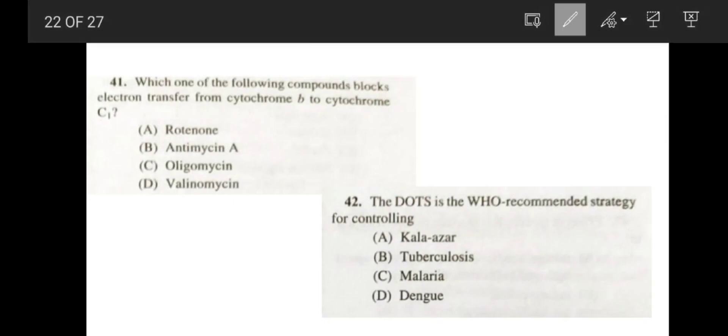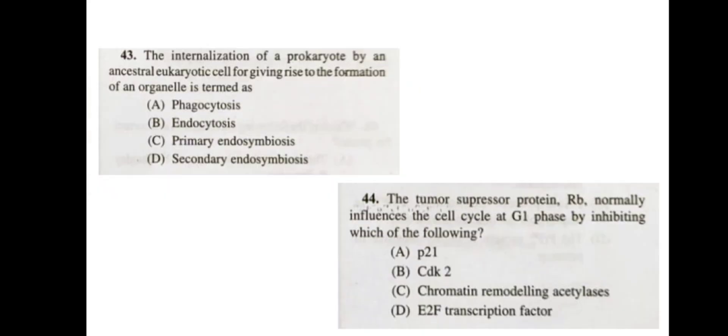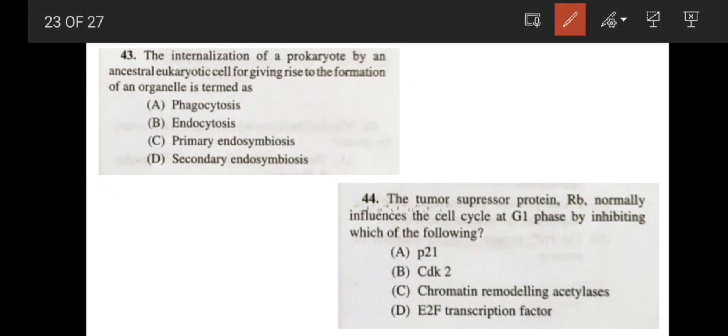Now, coming to the question number 41. Which one of the following compounds blocks the electron transfer from cytochrome B to cytochrome C1? The correct answer will be antimycin A. Next, the DOTS is the WHO recommended strategy for controlling tuberculosis. TB DOTS. Next, the internalization of prokaryotes by the ancestral eukaryotic cell for giving rise to the formation of an organelle is termed as primary endosymbiosis. In secondary endosymbiosis, a eukaryote ingests another eukaryotic cell. But here, ancestral eukaryotic cell is ingesting a prokaryote. So it is primary endosymbiosis.